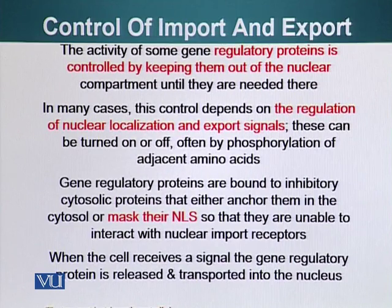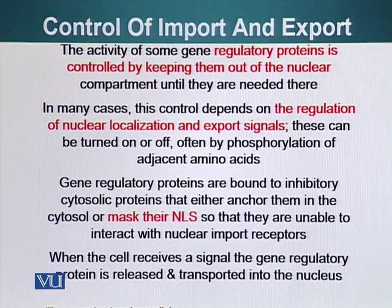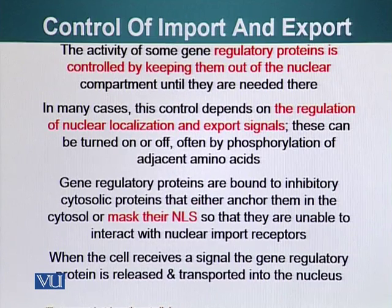We talked about this when we were talking about signaling. When cells receive a signal, the signaling cascade sometimes activates a gene regulatory protein which binds DNA at a specific location and recruits RNA polymerase, resulting in transcription and subsequently translation. Unless and until the cell receives a signal, the gene regulatory protein is kept in the cytoplasm and is not allowed to enter the nucleus.